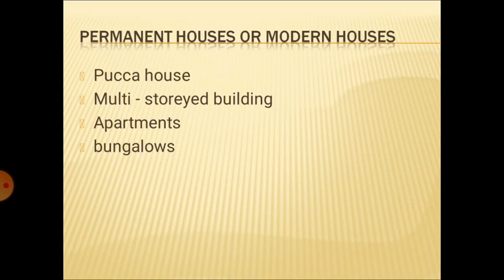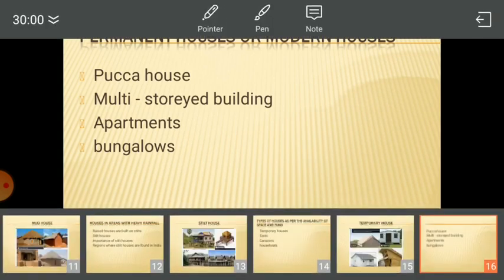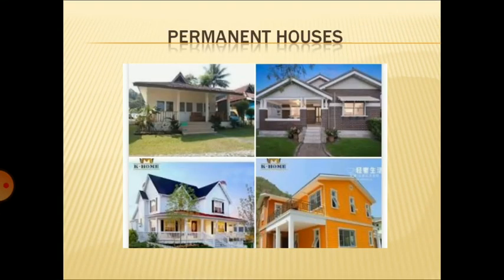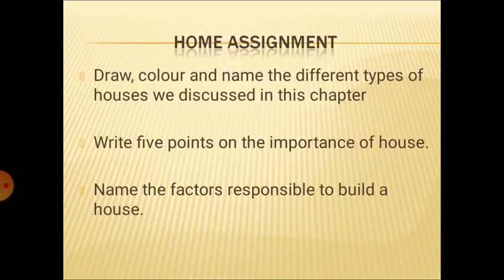This is all about the chapter. Now let's come to the assignment part. You can have a look at these beautiful pictures of permanent houses. Home assignment: The first question is to draw, color, and name different types of houses discussed in the chapter — like igloo, stilt houses, tent, and many more. Draw the pictures beautifully and color them.